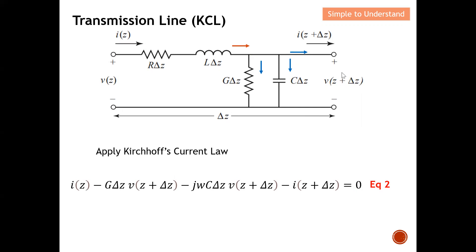For the capacitor branch, the current is the voltage multiplied by the conductance of the capacitor, which is jωC. So the current through the capacitor is V(z) × jωC × Δz. This term describes the amount of current flowing through the capacitor. The remaining term in the KCL equation is I(z + Δz). This gives us the second KCL equation.